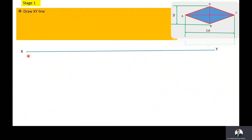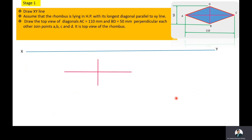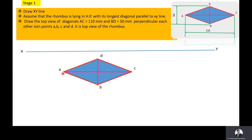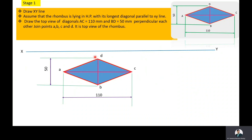Stage 1: as a first step, draw the XY line. In the initial position, the longer diagonal is parallel to the XY line and the smaller diagonal is perpendicular to the XY line. Draw the longer diagonal with a length of 110 mm and the smaller diagonal with a length of 50 mm — both bisecting each other at the center point. Join AB, BC, CD, and DA to form the rhombus. AC equals 110 mm and BD equals 50 mm. Drawing the top view of the rhombus is complete.